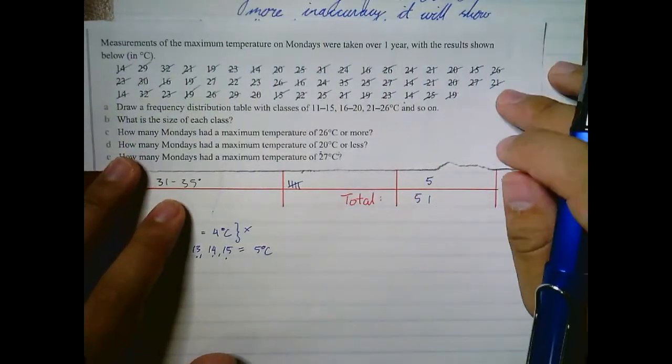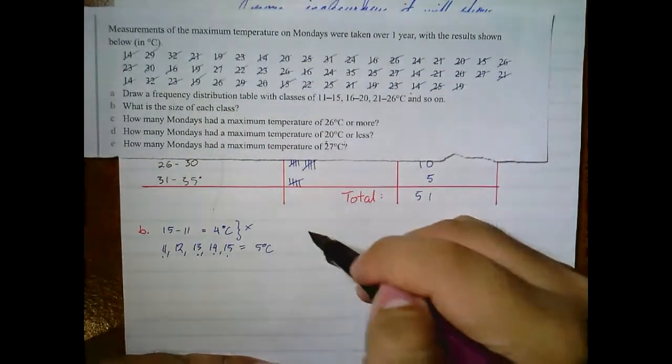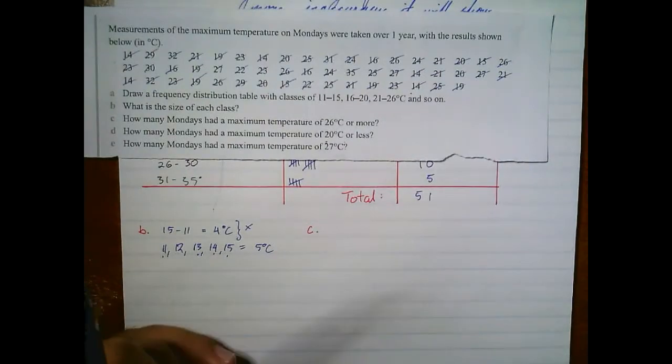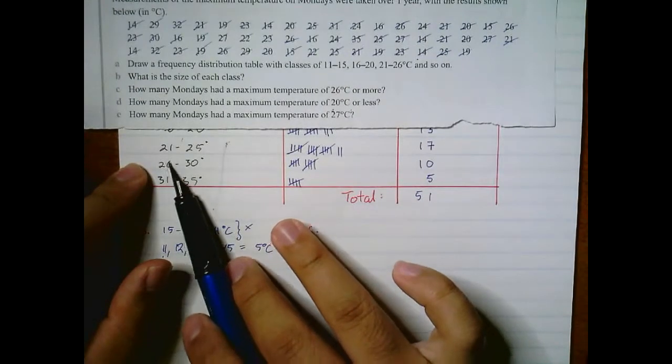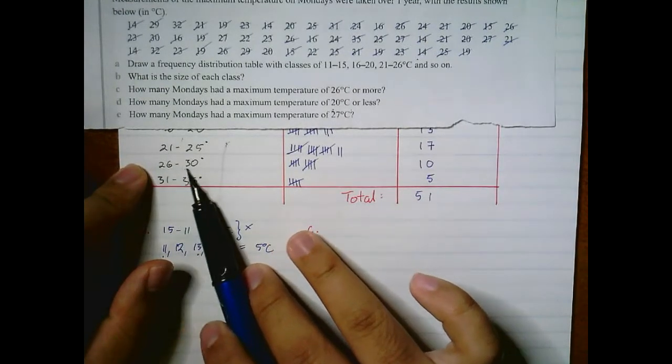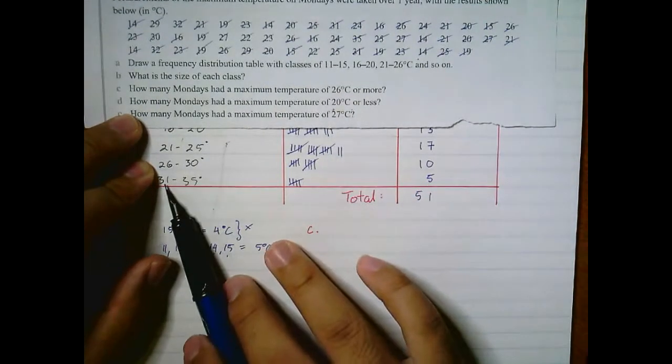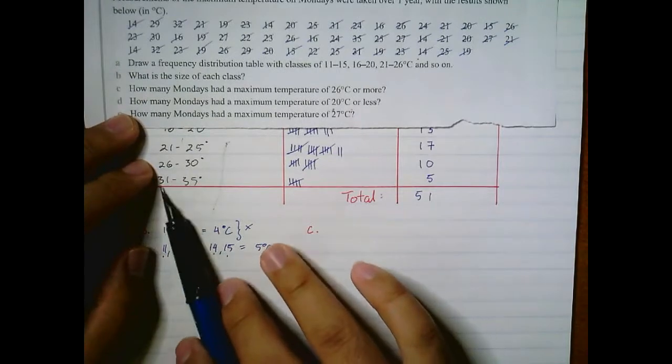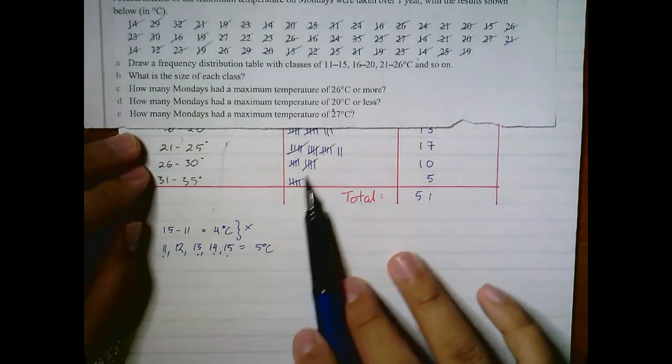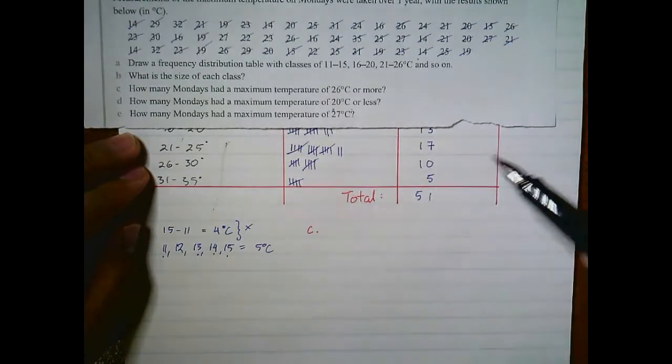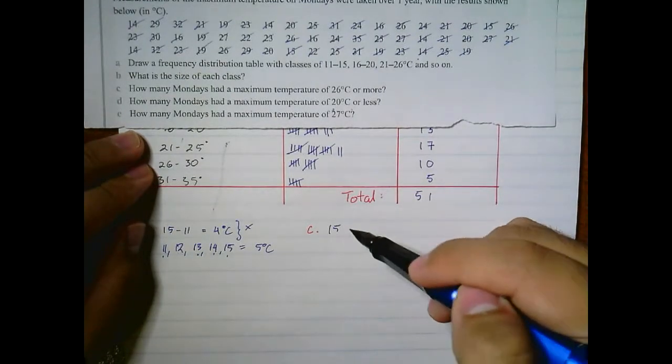How many Mondays had a maximum temperature of 26 or more? Question C. 26 or more, so here we have 26 and more, so that's 10. But this is also 26 or more because 31 is bigger than 26. So we're going to add these two here. That's 10, here we have 10 and 5, that is 15 Mondays.